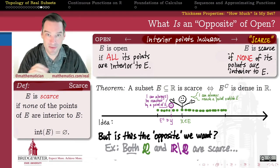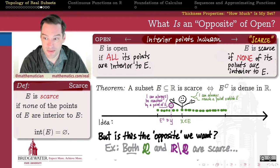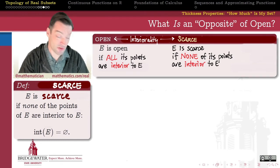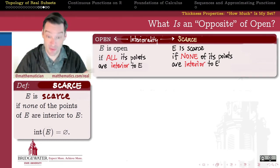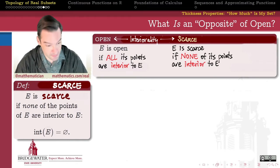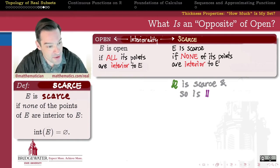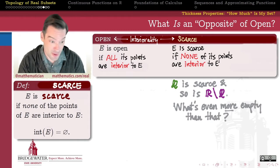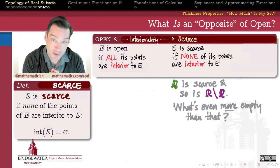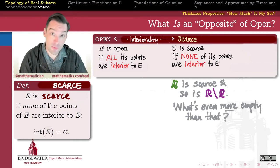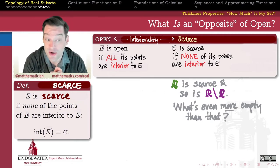We need something that's a little bit stronger, something with a little bit more teeth to it. We need a slightly stronger notion of having no open intervals in my set — one that rules out the rational numbers as the kind of set we could work with. The rationals are scarce, the irrationals are scarce, and their union is no longer scarce, so I want a notion of the opposite of open sets that's even more empty, even more spread apart than the scarce sets.